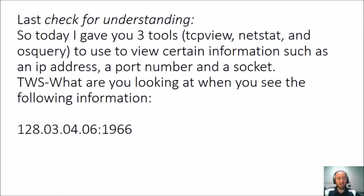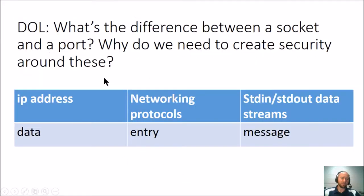My last check for understanding: I gave you three tools — TCP View, NETSTAT, and osquery — to use to view certain information such as an IP address, a port number, and thus a socket. Your think-write share is: what are you looking at when you see the following information? There's a bunch of numbers — tell me what those numbers are. Here's a little word bank to help you explain.